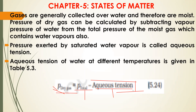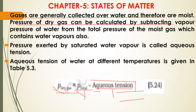We will see how aqueous tension is calculated. But here, the value of aqueous tension is given to you. You need to remember that if you have to find out the pressure of dry gas, you should have total pressure and aqueous tension. The pressure of dry gas can be calculated by subtracting the vapor pressure of water from the total pressure of the moist gas, which contains water vapor.